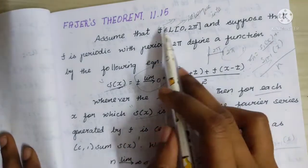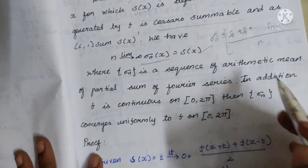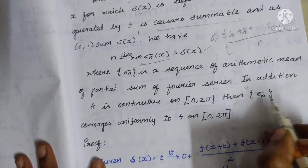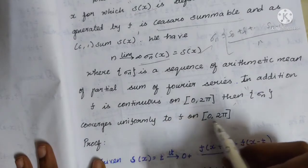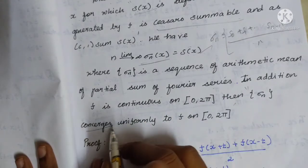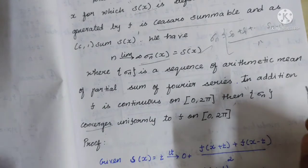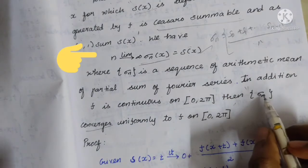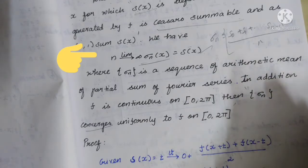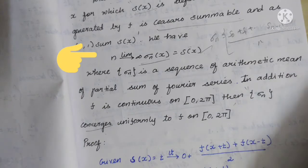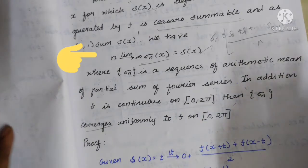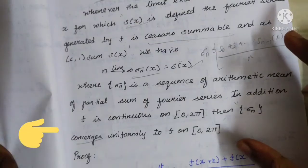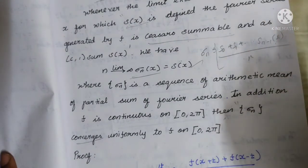In addition, if f is continuous on the closed interval [0, 2π], we will prove that σₙ converges uniformly to f on the closed interval [0, 2π]. If the limit exists, then limit n→∞ σₙ(x) = s(x). Let's prove it.